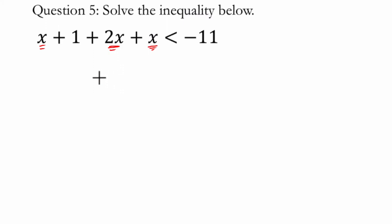It's 1 and 2 and 3 and 4 x's. I combine those and I plus 1. That's less than negative 11. So my first step is to combine like terms.